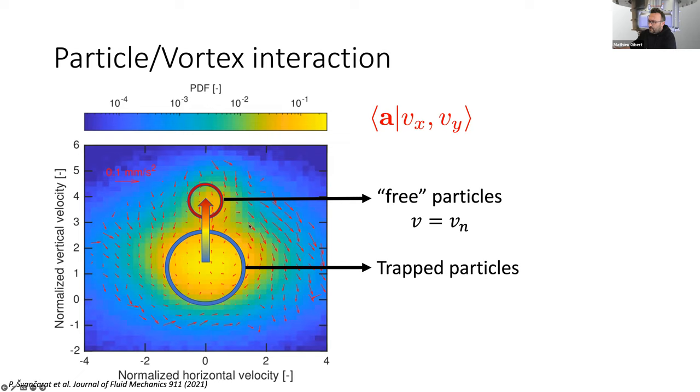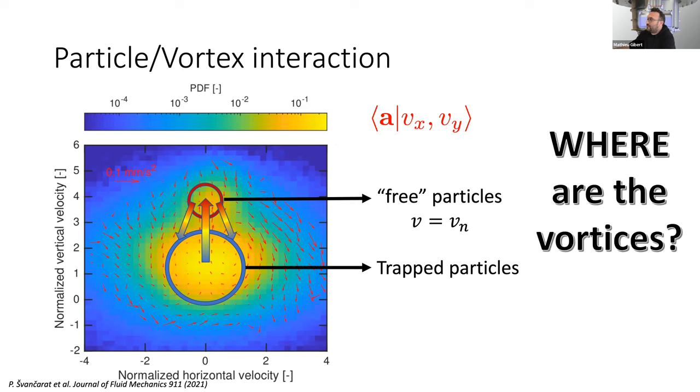On top of that, we have added the acceleration, so the red arrows are the accelerations conditioned on vx and vy. This reveals some sort of travel into this phase space which shows you can move from a trapped state to a free particle state if you accelerate in straight lines. And then you will eventually fall from this free particle state to the trapped one by acceleration which are bended downward. This means the particle trajectory is annoyed by something. That something, it's probably quantum vortices, but we didn't really see them. And the question is, where are they?